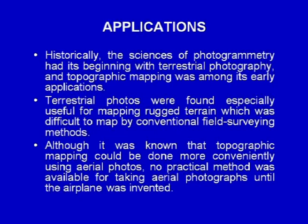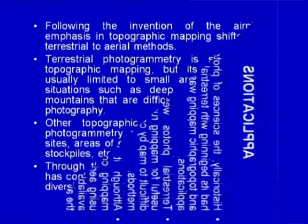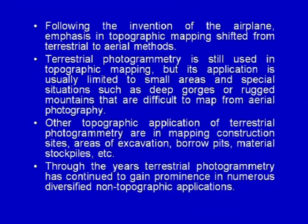Although it was known that topographic mapping could be done more conveniently using aerial photographs, no practical method was available for taking aerial photographs until the airplane was invented. Following the invention of the airplane, emphasis in topographic mapping shifted from terrestrial to aerial methods. Terrestrial photogrammetry is still used in topographic mapping, but its application is usually limited to small areas and special situations such as deep gorges or rugged mountains that are difficult to map from aerial photography.